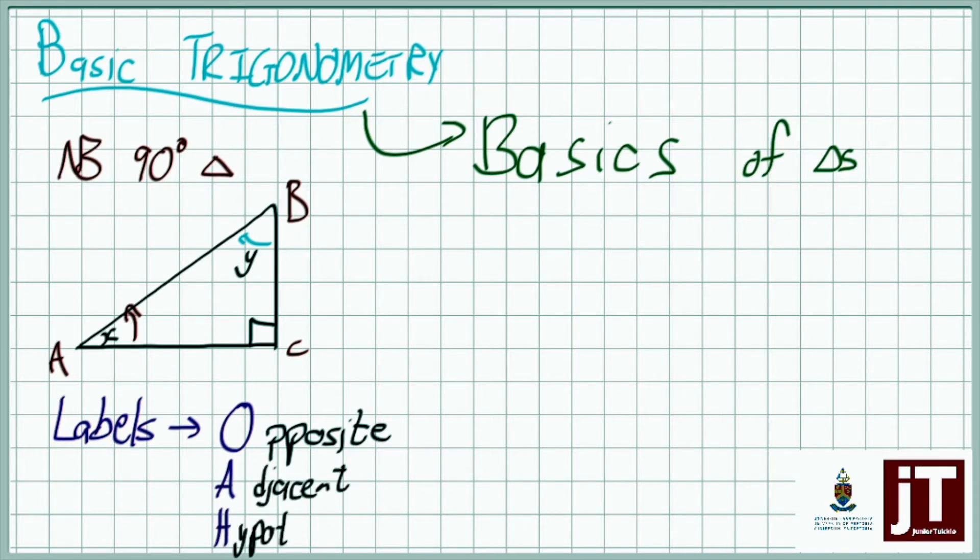When you look at the hypotenuse, that's kind of our starting point. The hypotenuse is always going to be opposite the 90 degrees. No matter how you turn the triangle it will always be opposite the 90 degrees. But the opposite and the adjacent depend on which angle you look from.